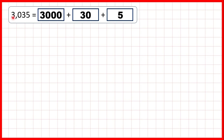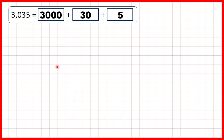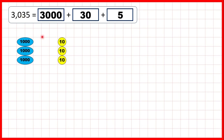Using base 10 blocks for 3,035, we can show 3 thousands. We don't show any hundreds, we show 3 tens, and 5 ones. Or using place value counters, there's 3 thousands, no hundreds, 3 tens, and 5 ones.